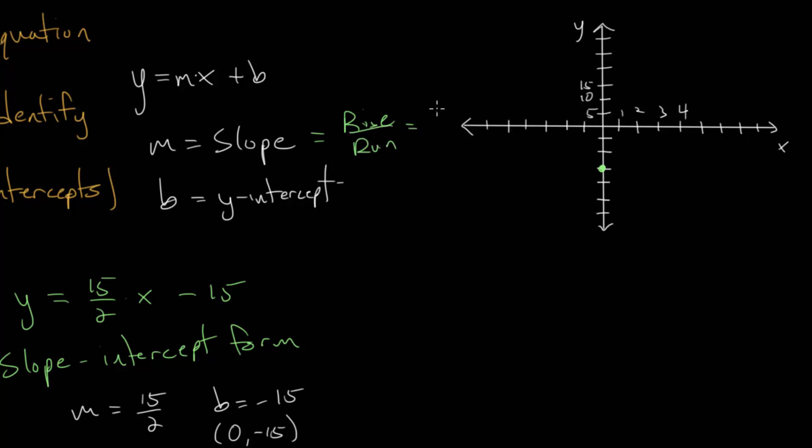Or essentially, how much the function goes up or down divided by how much it goes left or right. In our case, we know our slope is 15 over 2, which means we go up 15 every time we go over 2 units. So if we go up 15, that brings us back to a y value of 0, and then go over 2. We're now at this point. And when constructing a line, we really just need two points, and we can connect them with a straight line.